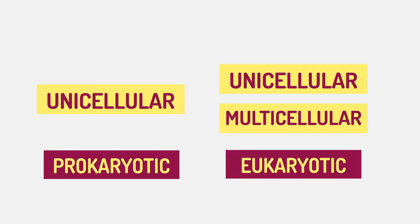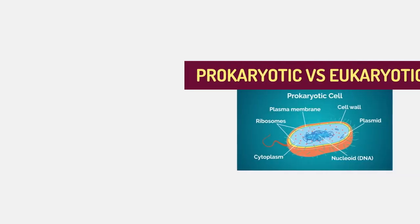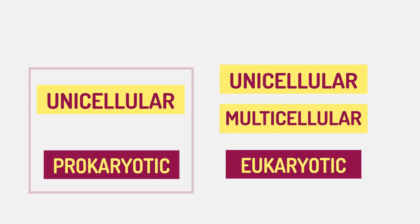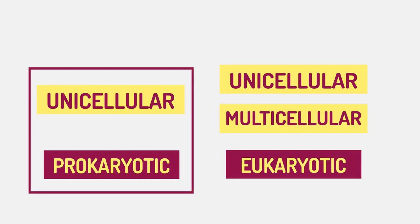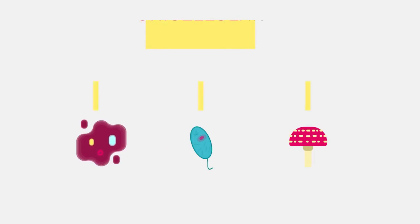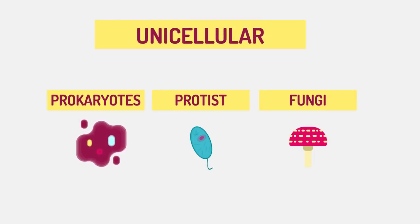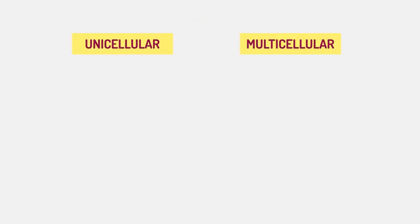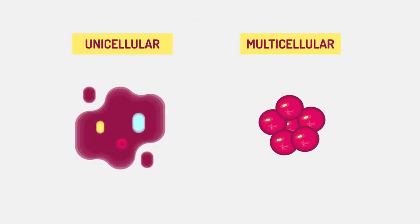Eukaryotes can be uni or multicellular organisms. We'll look at the difference between pro and eukaryotes in this video, and discover why the statement that all prokaryotes are unicellular is contended by some scientists. As well as prokaryotes, most protists and some fungi like yeast are also unicellular.